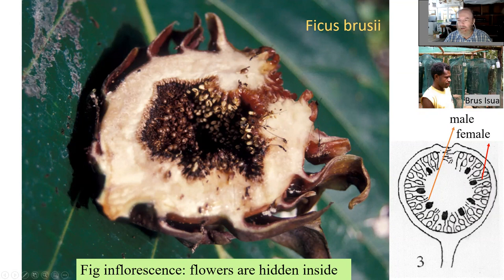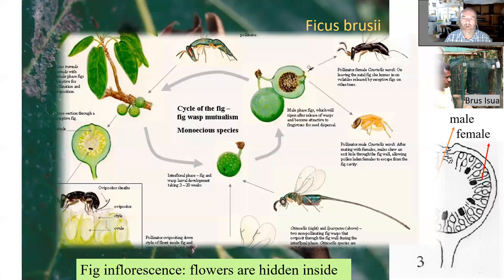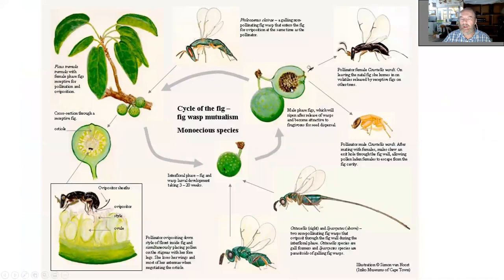We will start with the simplest explanation of the fig structure: it has both male and female flowers inside. The female flowers have stigmas, and the male flowers produce pollen.